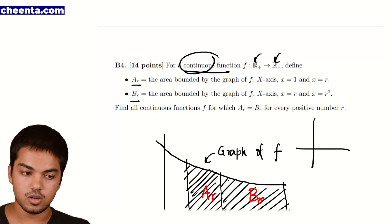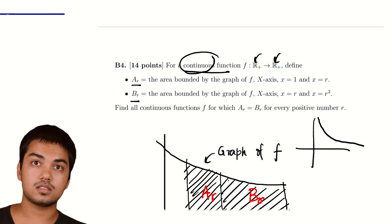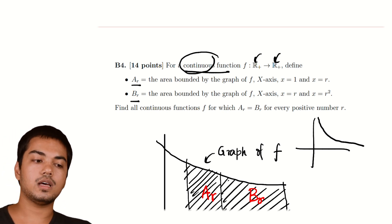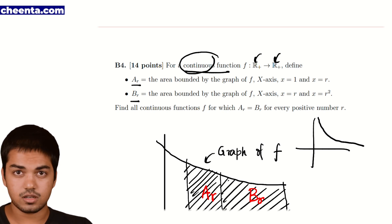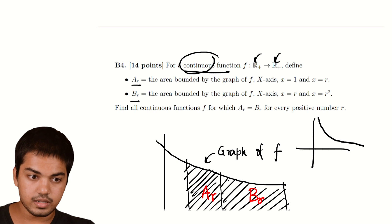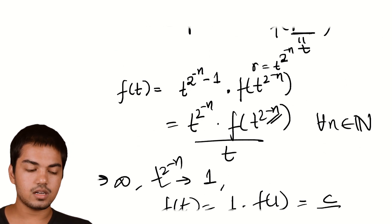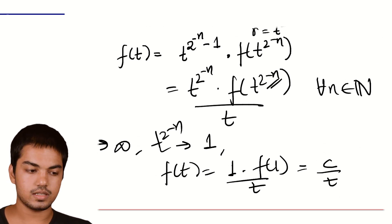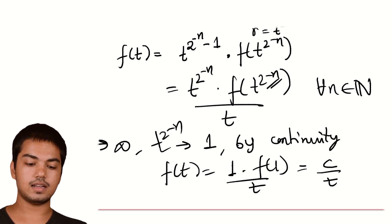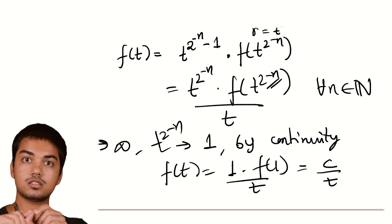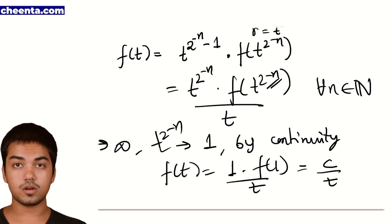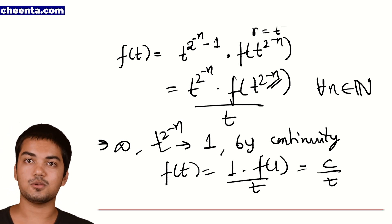A function of the form f(t) = C/t will do the job, and it's the only kind of function that will. I hope you enjoyed this video and are now a bit more comfortable with the fundamental theorem of calculus, chain rule, and continuity. This is an important detail — this result only worked because of continuity: we used the fact that as the exponent tends to 0, f(t^(2^(−n))) tends to f(1), which is only true because of continuity. Thank you so much for watching.